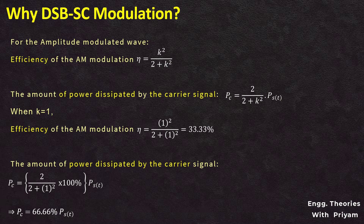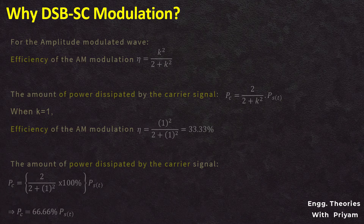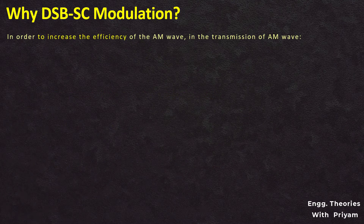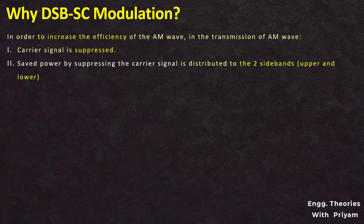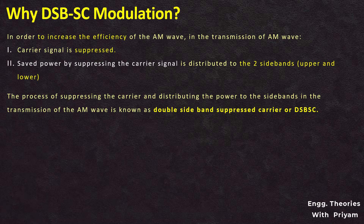This amount of power is fully wasted on the carrier signal which carries no information, because the information is only contained in the upper and lower sidebands. In order to increase the efficiency of transmission, the carrier signal is suppressed, and the saved power by suppressing the carrier signal is distributed between the upper and lower sidebands.